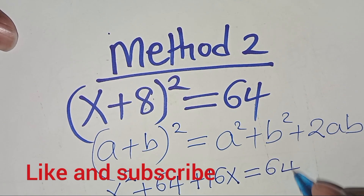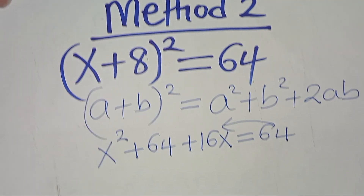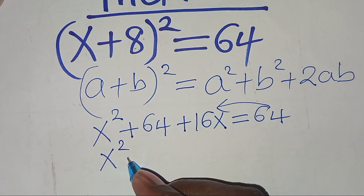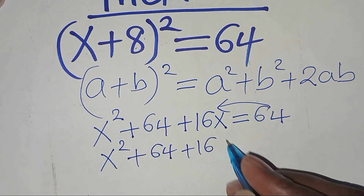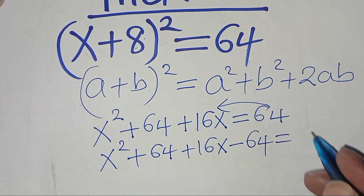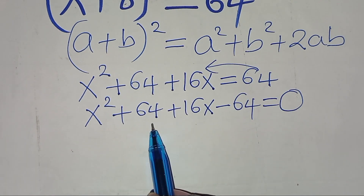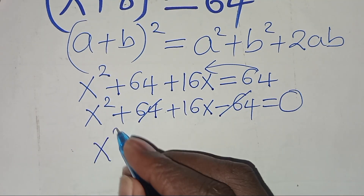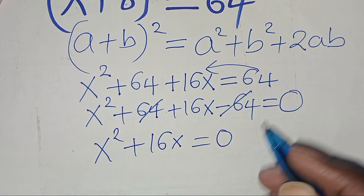This equals 64, so let's take 64 to the left-hand side. We have x squared plus 64 plus 16x, subtract 64, equal to 0. The 64 and negative 64 cancel, so we are left with x squared plus 16x, equal to 0.